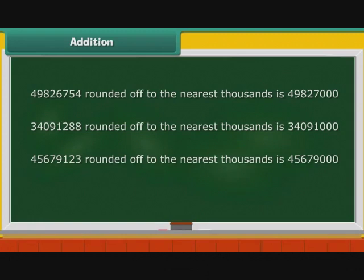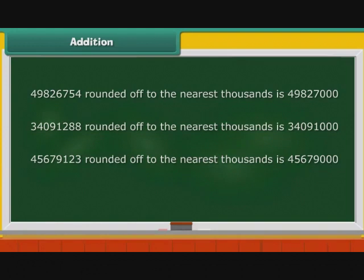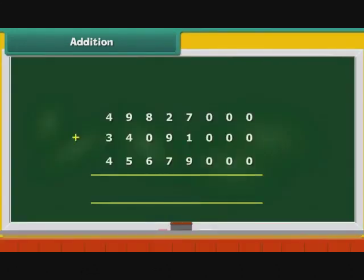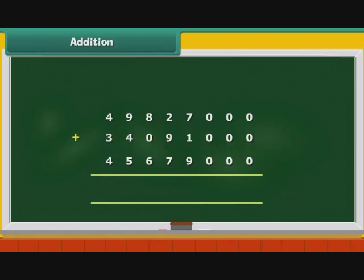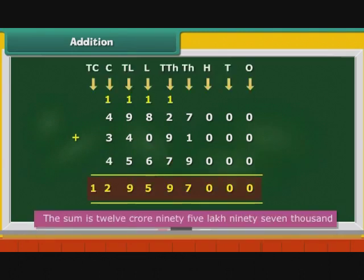49826754 rounded off to the nearest thousands is 49827000. 45679123 rounded off to the nearest thousands is 45679000. 34091 rounded off is 34000, and 288 rounded off is 0. The estimated sum is 129597000.